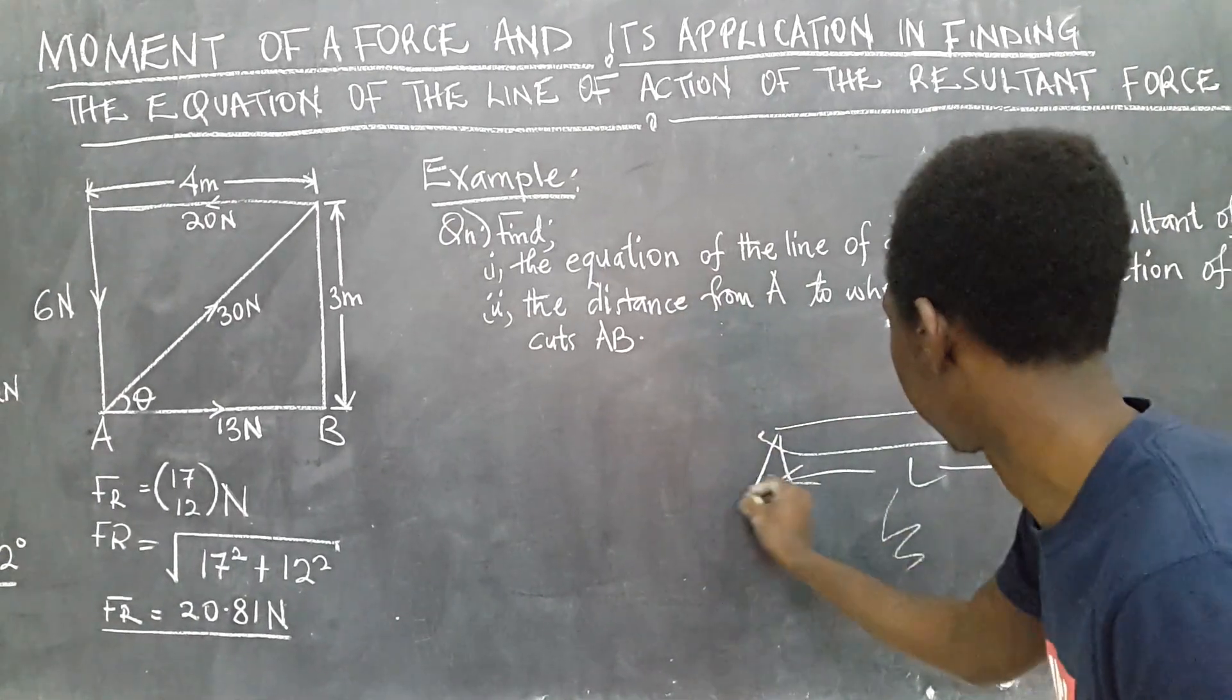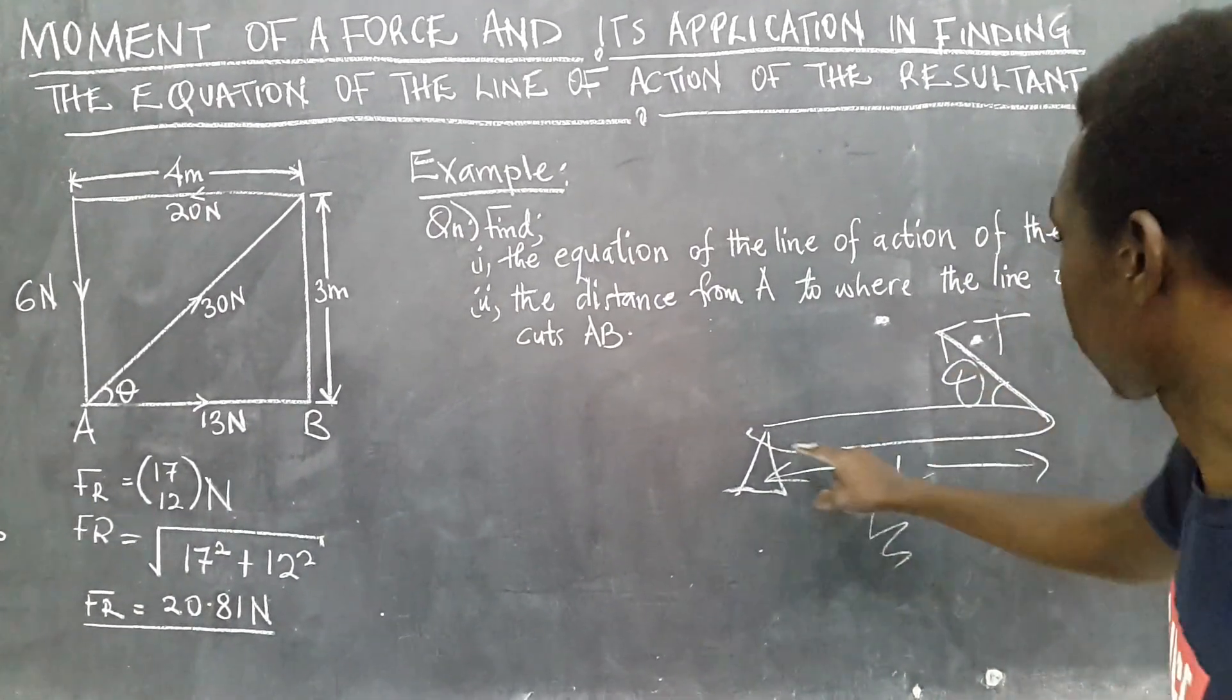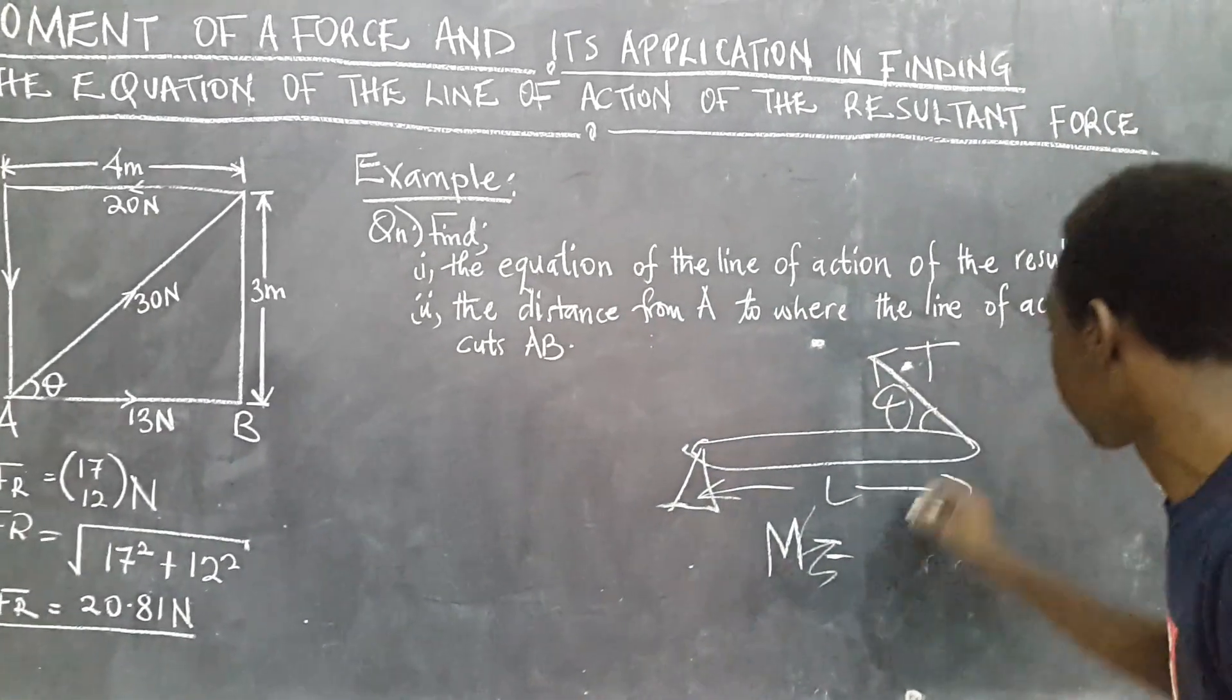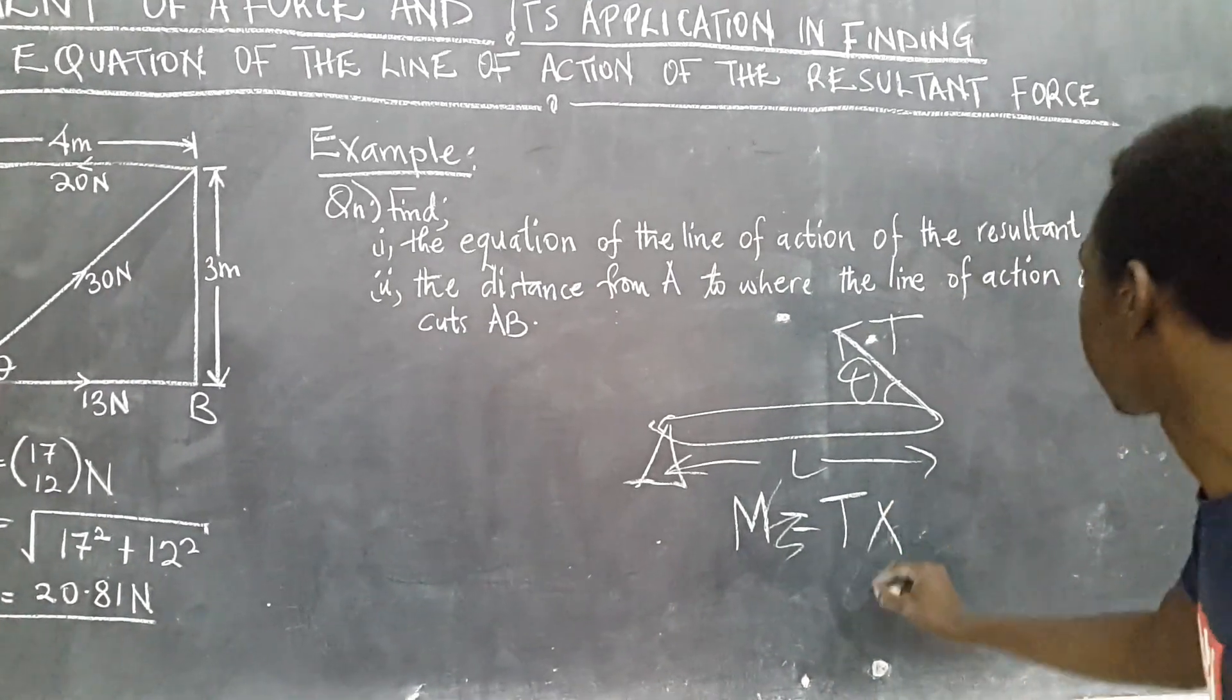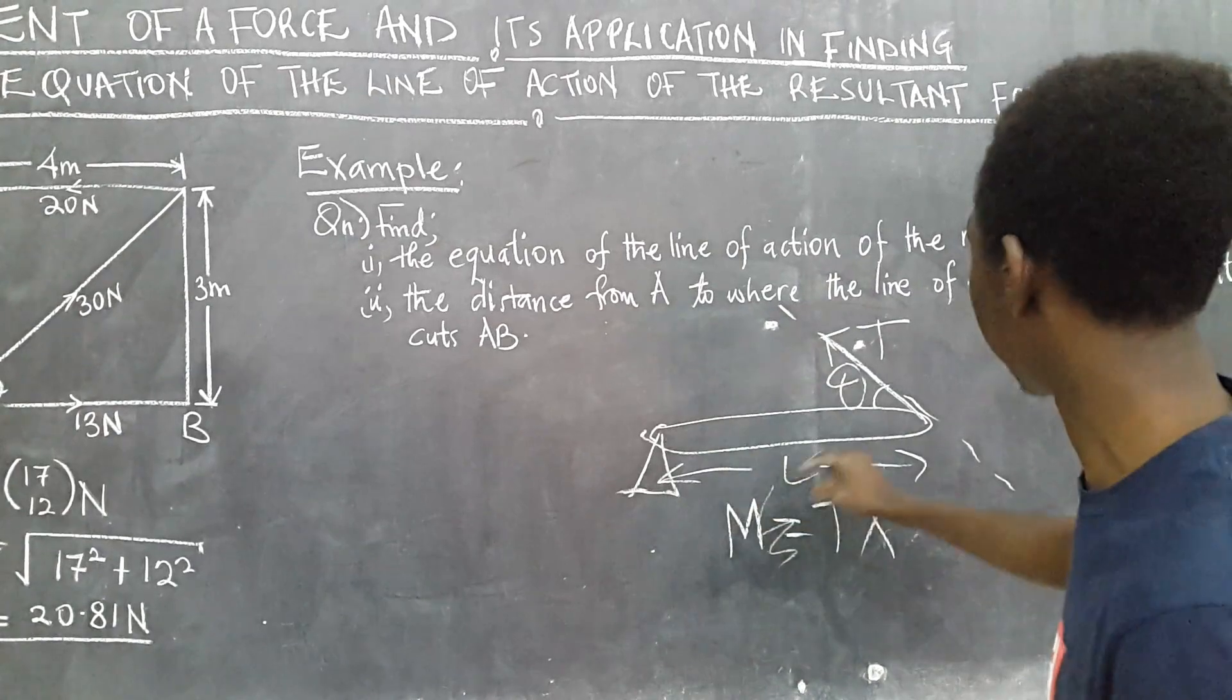The moment of this force T about this pivot M would be the product of this force and the perpendicular distance from the line of action of this force to this turning point.